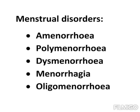So what is dysmenorrhea? Pain associated with menstruation is called dysmenorrhea. Two types: primary dysmenorrhea and secondary dysmenorrhea. Primary dysmenorrhea is the pain due to the secretion of prostaglandin in the uterus. Secondary dysmenorrhea is caused by a disorder in the reproductive system like endometriosis or uterine fibroids.